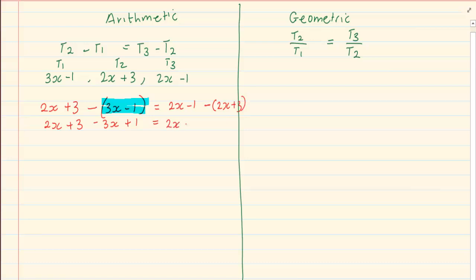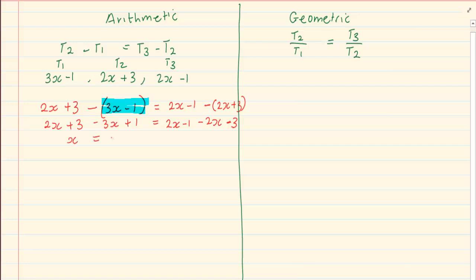So we have 2x minus 1, minus (2x minus 3). After that it's simply solving for x: bring all the x's to one side. At this stage you should be able to solve for x without further explanation. So we have x is equal to 8. Remember, your algebra has to be correct.